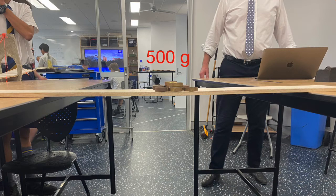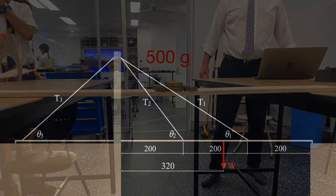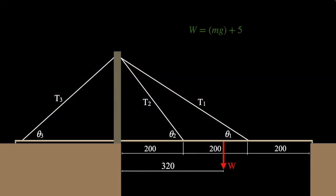So what that means for our weight value is we need to get the mass that was in our bucket, we times it by negative 10, and we plus five newtons from our 500 grams. So we're taking that off.